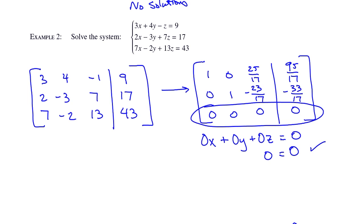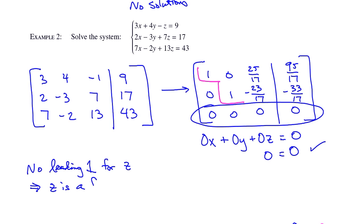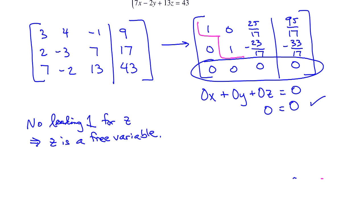Now what we start looking for are the leading ones. We look for the leading one in the first column — that's the variable for x, so x has a leading one. We look for one in the second column, and yes, y has a leading one. Then the question is, does z have a leading one? There are no ones in the third column, so z does not have a leading one. That means z is what we call a free variable — one that's allowed to take on any real value in the set of solutions.